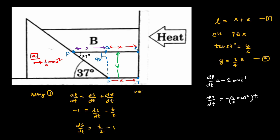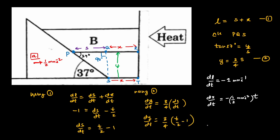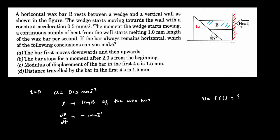Using Equation 2, dy/dt = (3/4) × ds/dt, so dy/dt = (3/4)(t/2 − 1). This is Equation 3 — our velocity of the bar as a function of time — and from it we can interpret all the answer options.